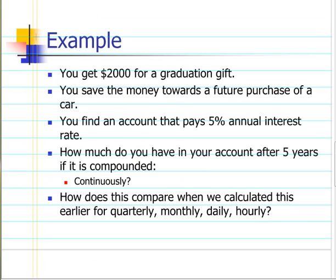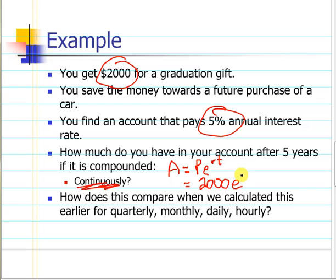So this is the same problem we just did a minute ago. We have still our principal of 2,000, same interest rate, but this time it says it's compounded continuously. That's the trigger to know that we're going to use our PERT formula. So for this formula, our principal was 2,000, e, and we're going to raise that to the point zero five times five power, and we'll calculate that, just one second.